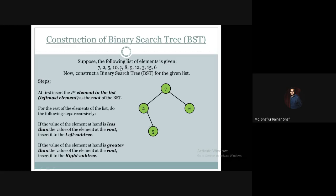Then we take 1. We compare 1 with the root 7 — 1 is less than 7 so it moves to the left subtree. Then we compare 1 with the left subtree root, which is 2 — 1 is obviously less than 2, so 1 will go down to the left subtree of 2.